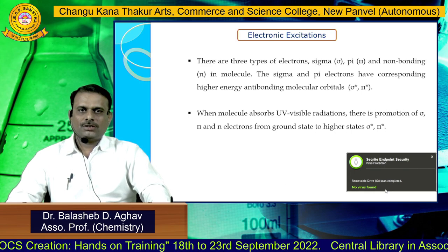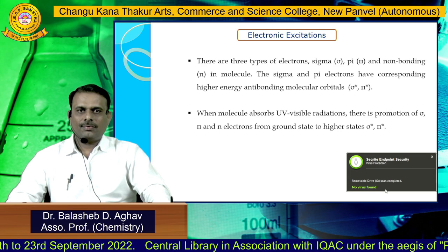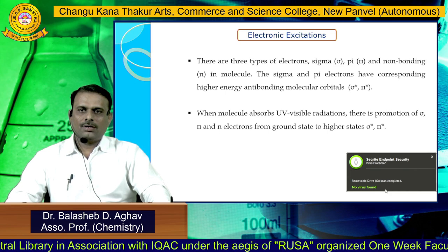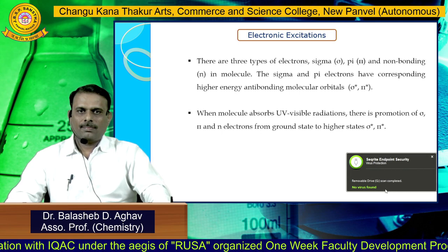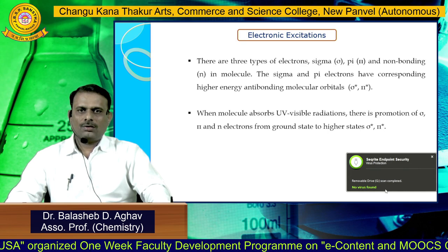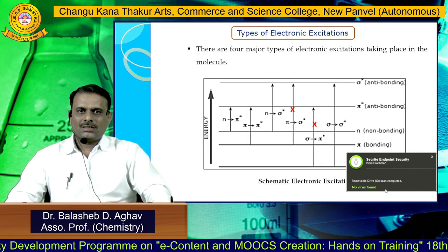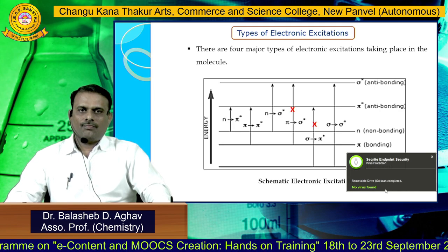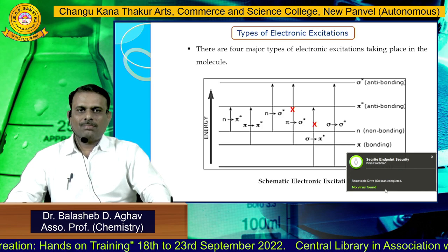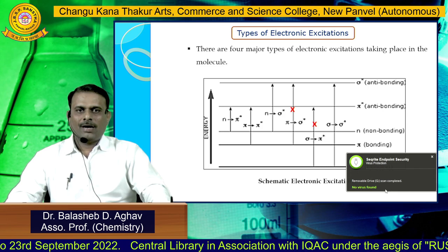Since UV-visible spectroscopy is based on electronic excitation, let's see what electronic excitations are. In any compound there are three types of electrons: sigma electrons, pi electrons, and non-bonding electrons. Sigma and pi electrons have corresponding high-energy anti-bonding molecular orbitals — sigma star and pi star. When the molecule absorbs ultraviolet radiation, electrons are promoted from the ground state to higher energy levels. There are four major electronic excitations: sigma to sigma star, n to sigma star, pi to pi star, and n to pi star. Sigma to pi star and pi to sigma star are not allowed transitions.